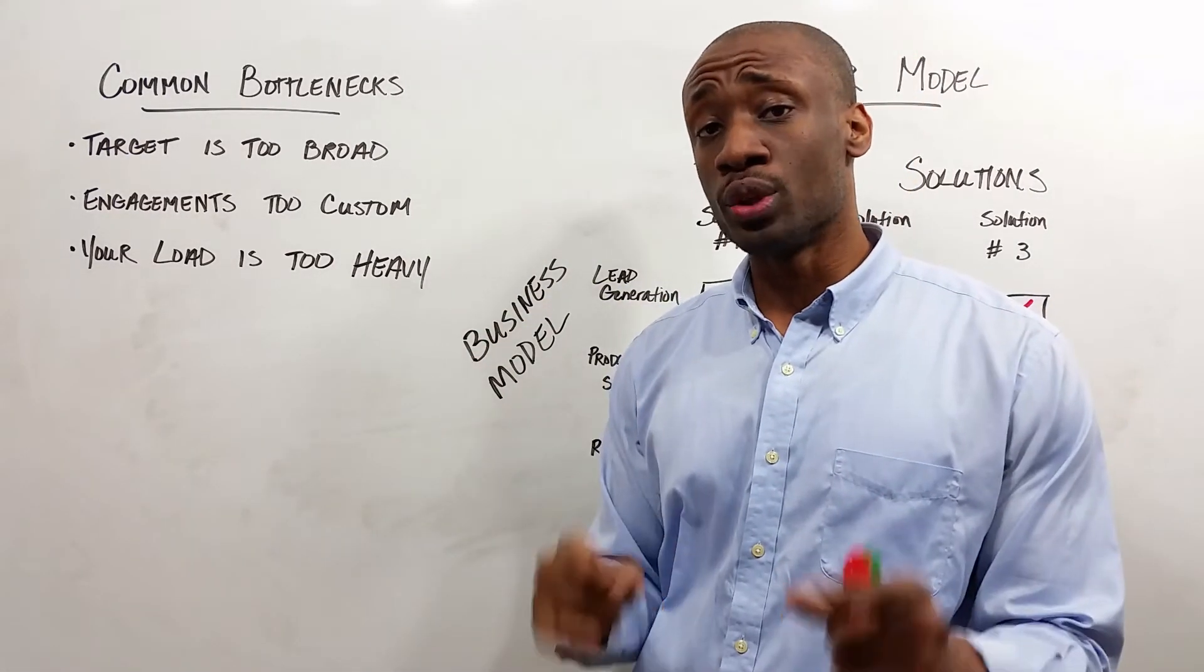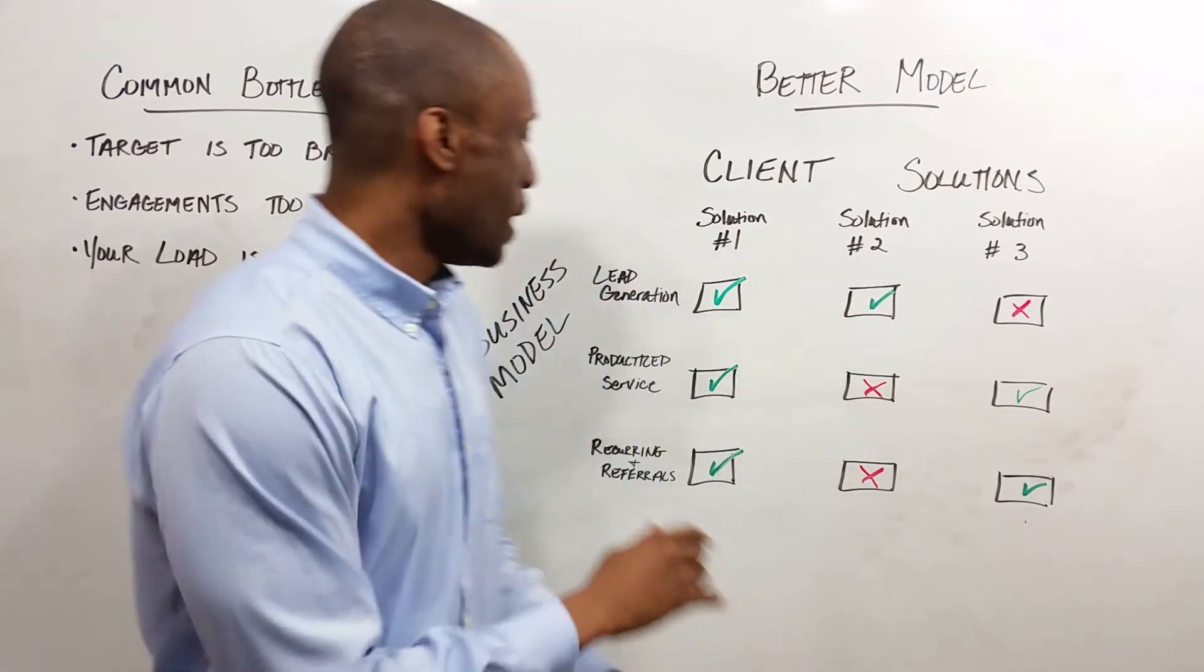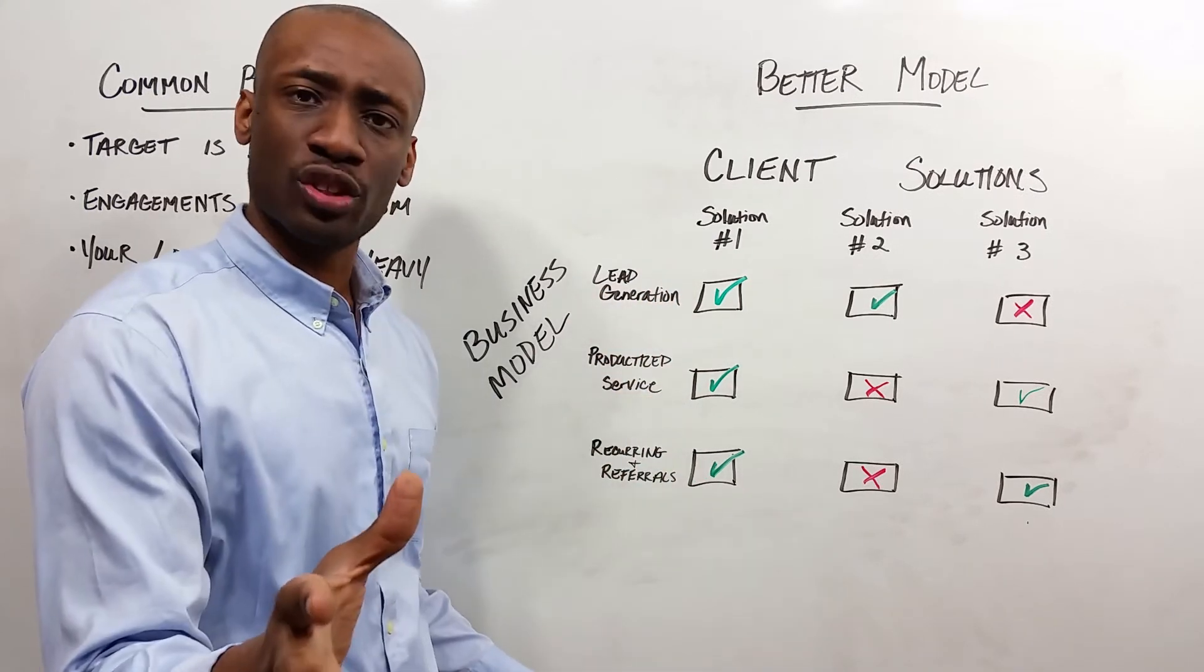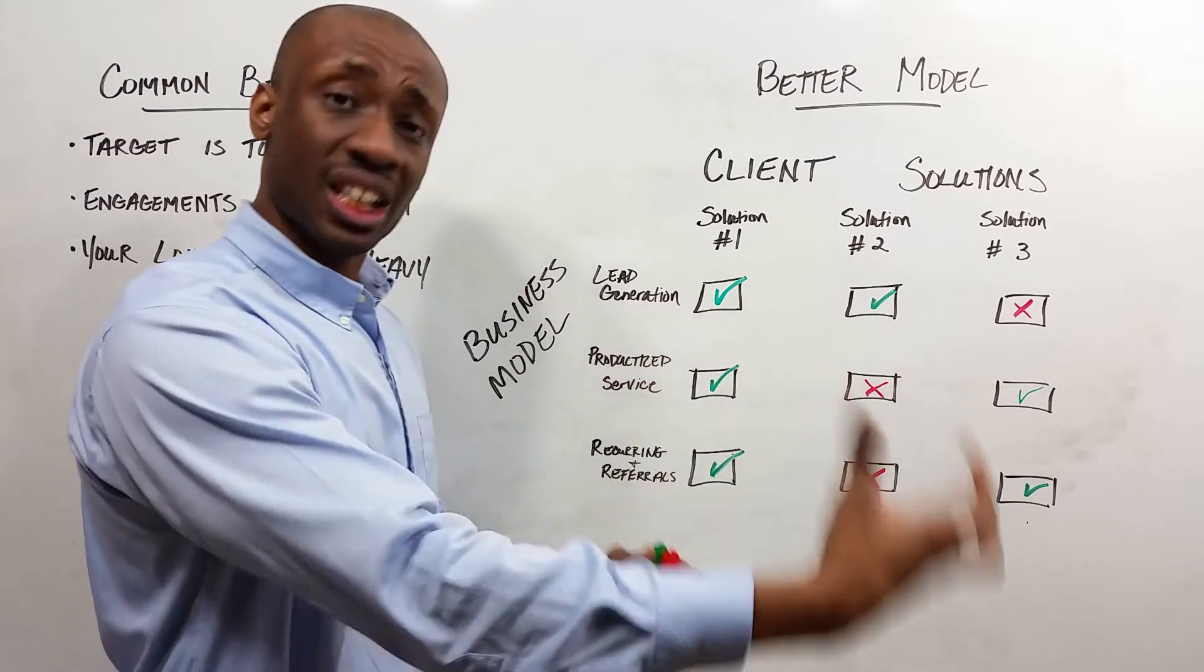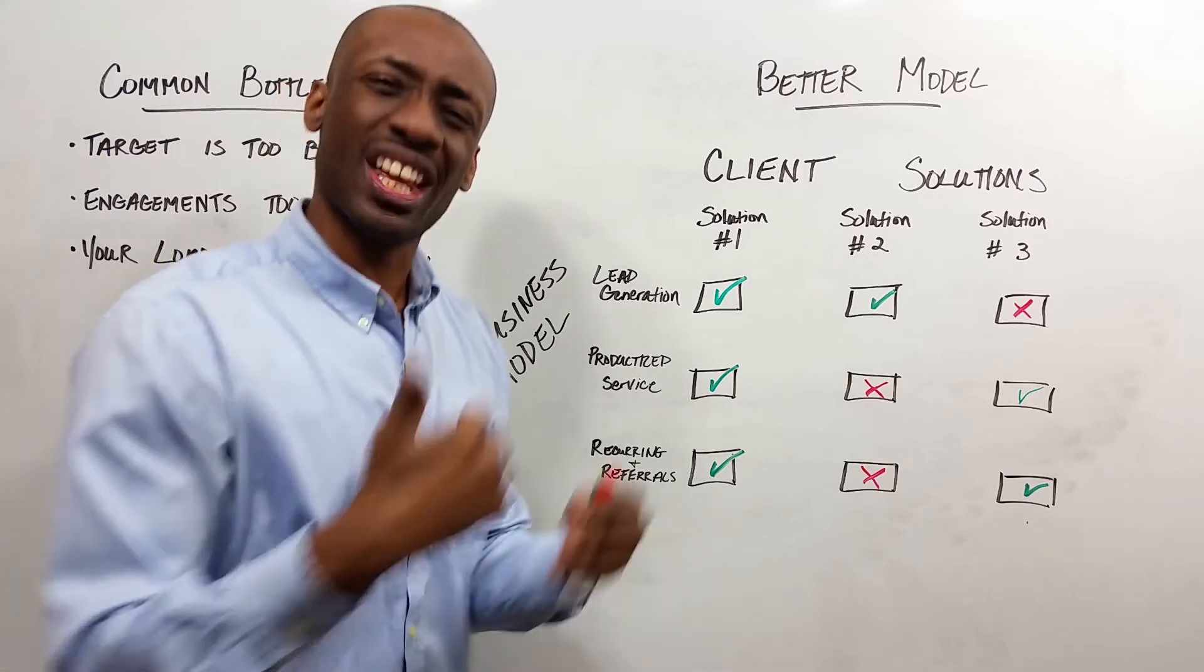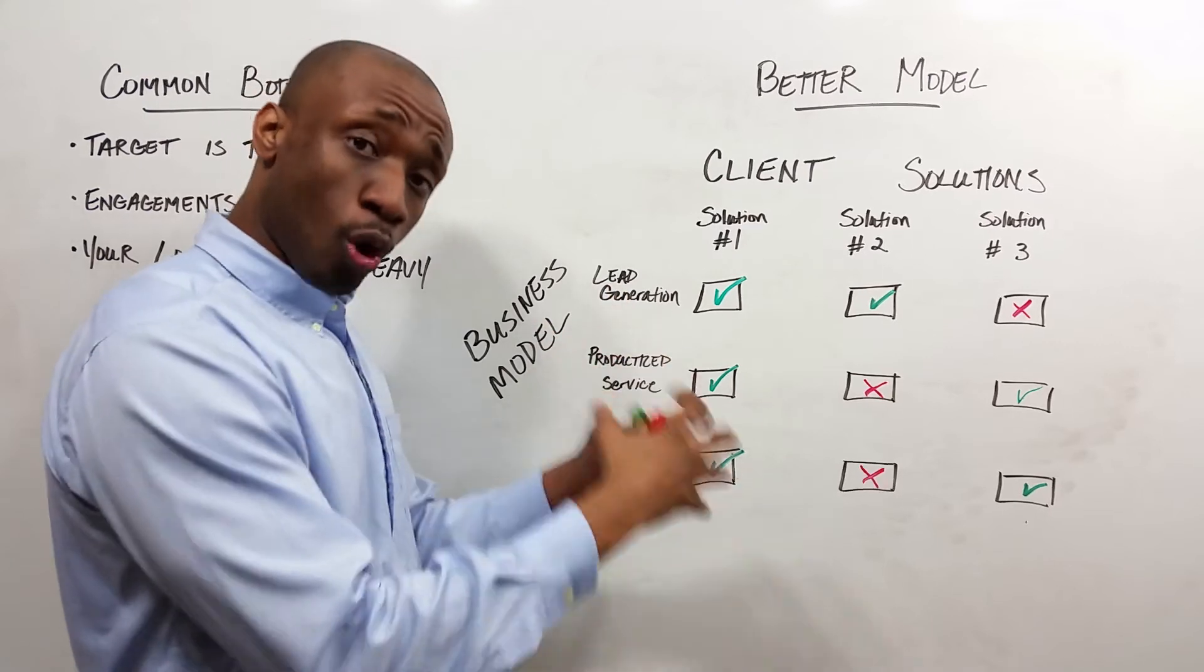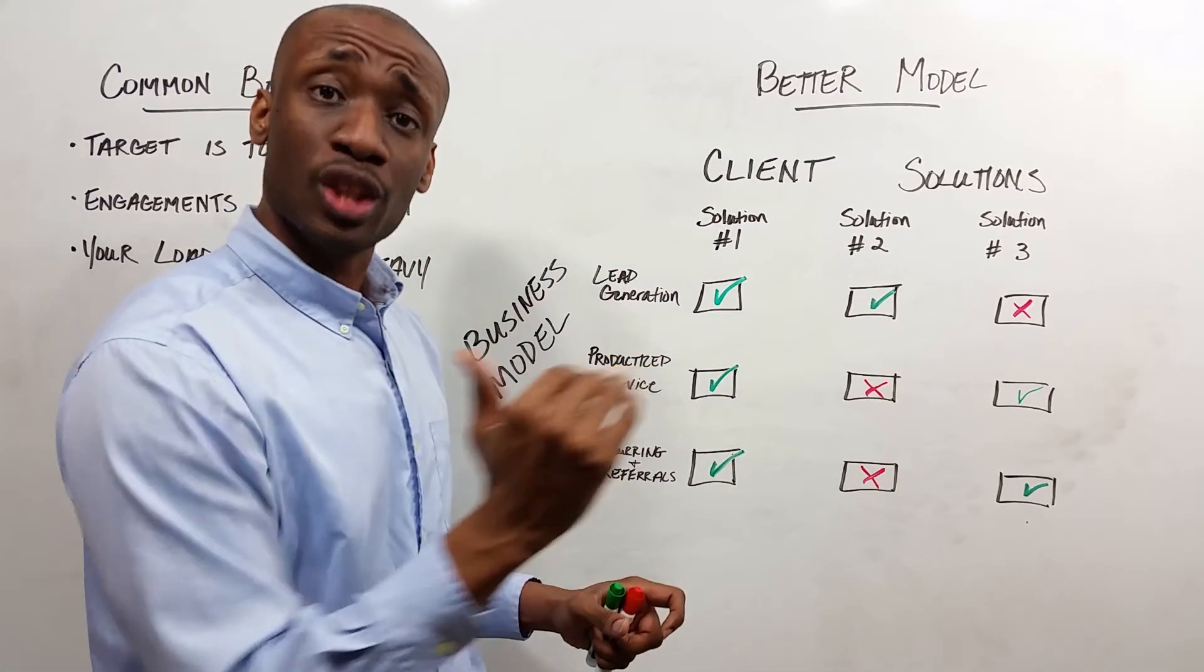And then third, now your load as the leader of the company is so much lighter. And here's how: because you can get someone in your company to specialize in lead generation. You don't have to do it now. There's a specific system you apply and you can delegate that to someone on your team. You can put someone over the productized service. Now you don't have to be involved with every client in every engagement in all of its depth because you've broken out the service in a certain number of steps. We just got to make sure we hit the major milestones.